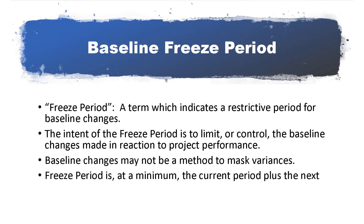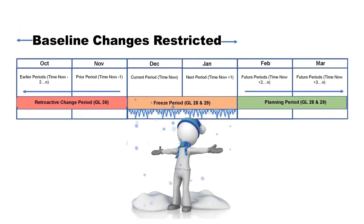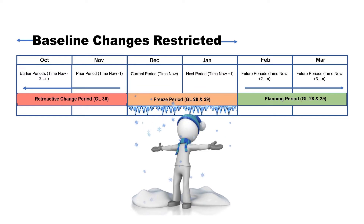Per DOE guidance, this freeze period is, at a minimum, the current accounting period plus the next accounting period. Frequent, continuing, or unallowable adjustments to the baseline within the freeze period are suggestive of a poor plan and will result in the lack of insight into the true performance and progress of the project. Repeated freeze period changes have the potential for actual cost misallocation and mischarging, as well as misstating actual performance against the plan. The freeze period is depicted in the graphic as the orange section spanning the months of December and January.